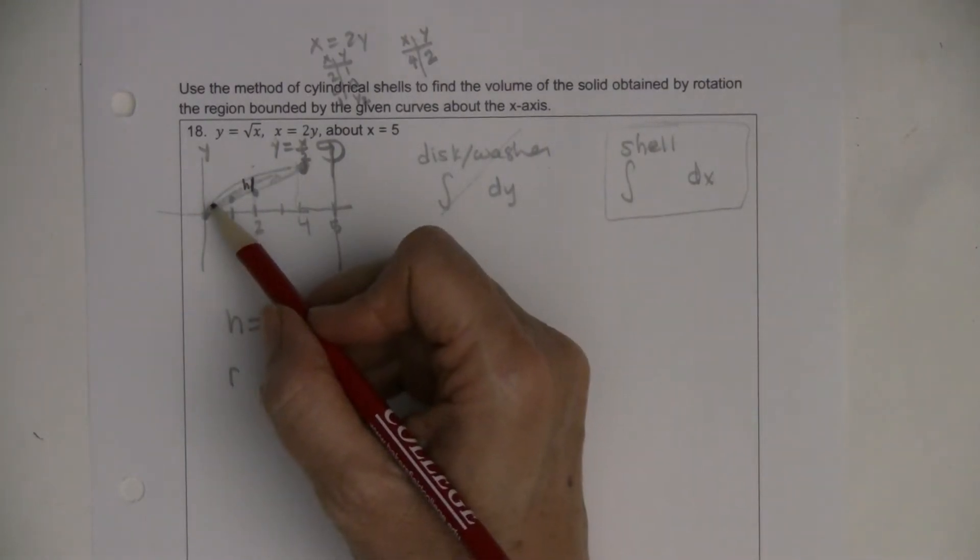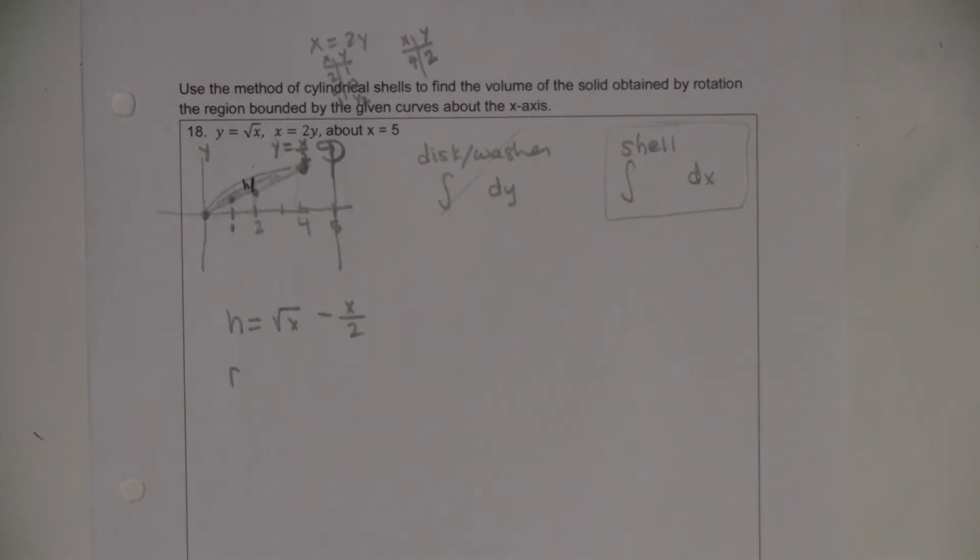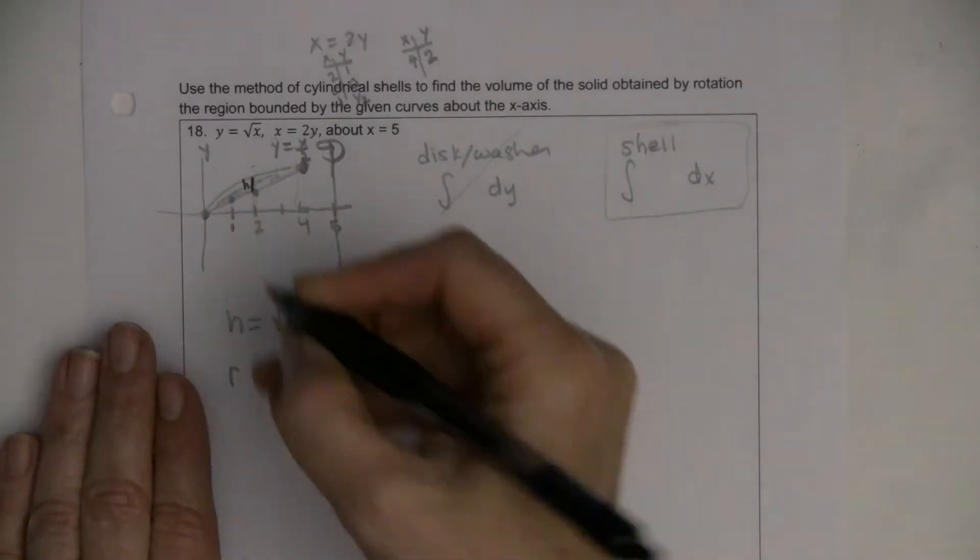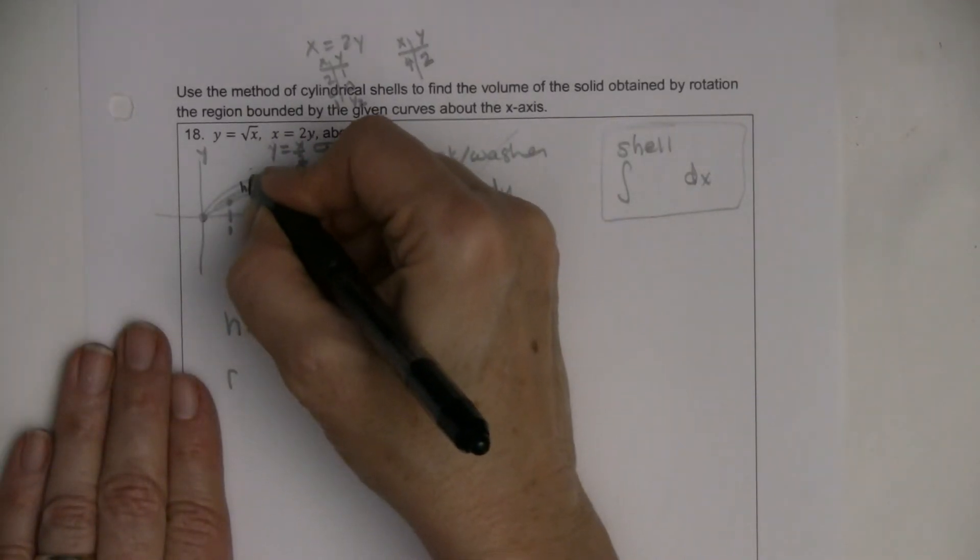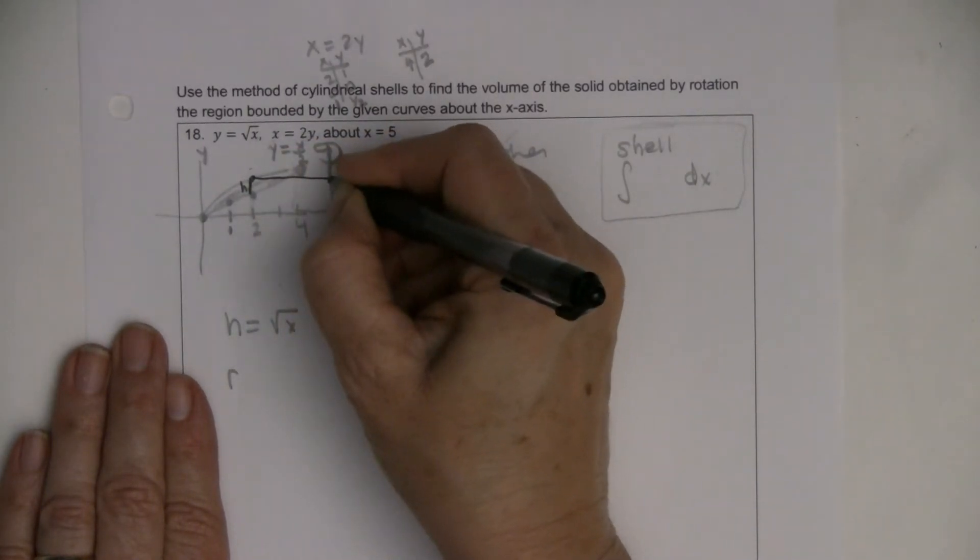You notice that the top curve and the bottom curve are the same all the way from 0 to 4. Everywhere there, the top curve and the bottom curve are exactly the same. Now I want to come up with what my r is.